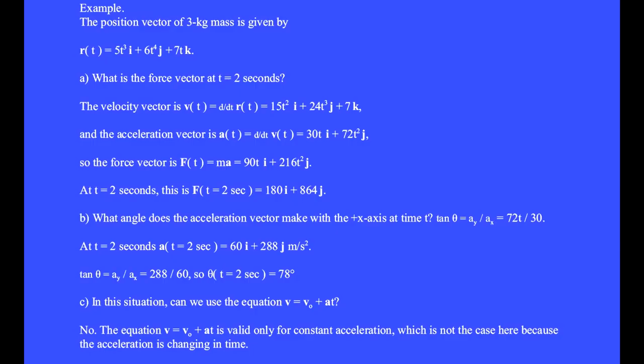The position vector of a 3 kilogram mass is given by r(t) = 5t³ i-hat plus 6t⁴ j-hat plus 7t k-hat.